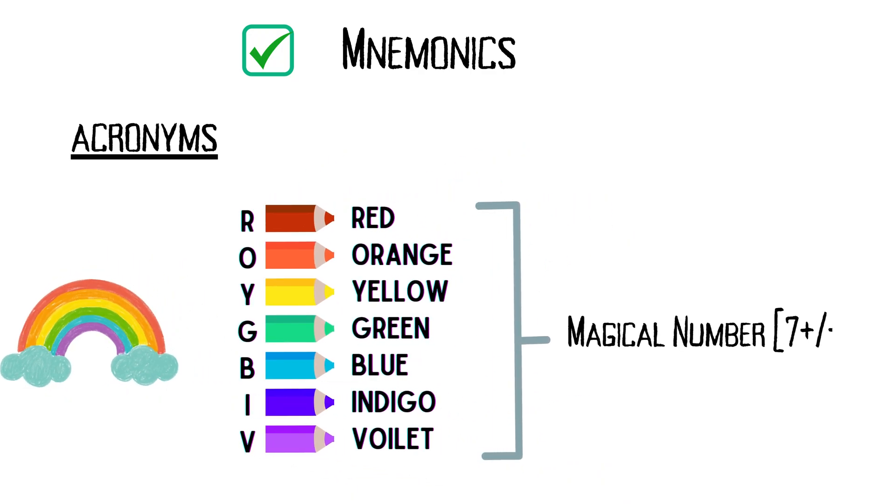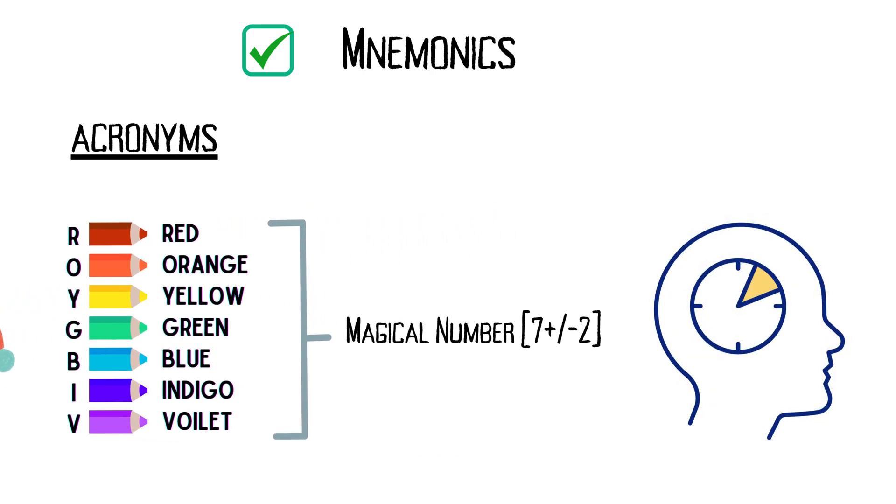Mnemonics that respect the magical number seven principle are indeed some of the most memorable. By chunking information into groups of around seven, plus or minus two items, mnemonics capitalize on our brain's natural capacity for short-term memory.